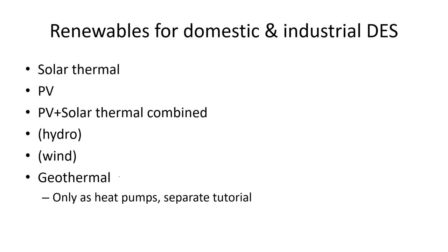Another renewable resource is geothermal power, which for domestic and industrial decentralized energy systems is considered to be used in the form of heat pumps, specifically ground source heat pumps, where you use the natural heat flow from the earth's core to the crust. For heat pumps and mainly industrial heat pumps, we will have a separate tutorial.